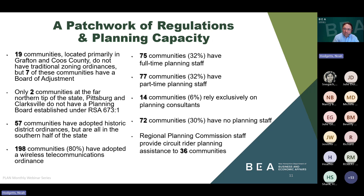In those 72 communities with no planning capacity, it's just the volunteer planning board, with maybe an administrative assistant shepherding all applications through the process. In communities that do have more planning capacity, Portsmouth, Dover, and Londonderry have adopted and utilized the most innovative land use controls and other planning tools authorized under the Innovative Land Use Control Statute RSA 674:21.